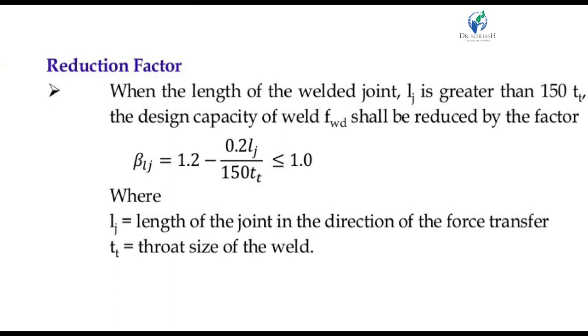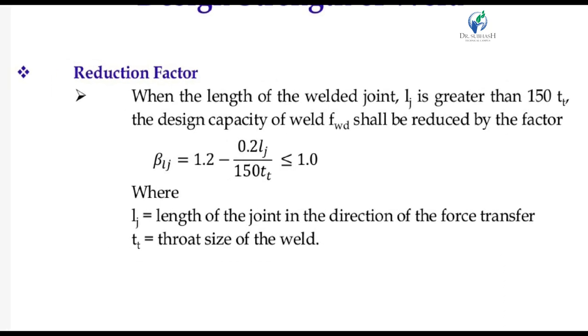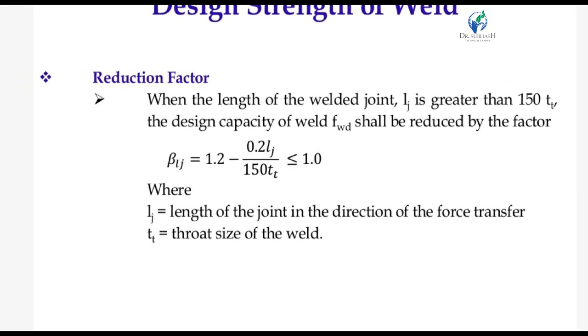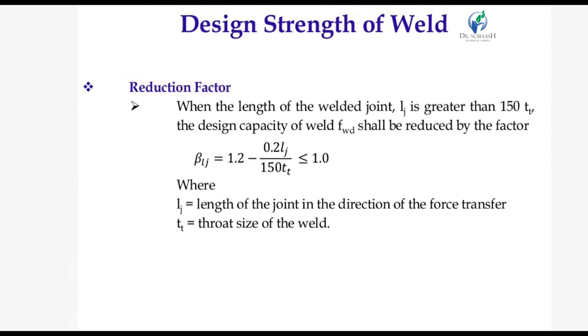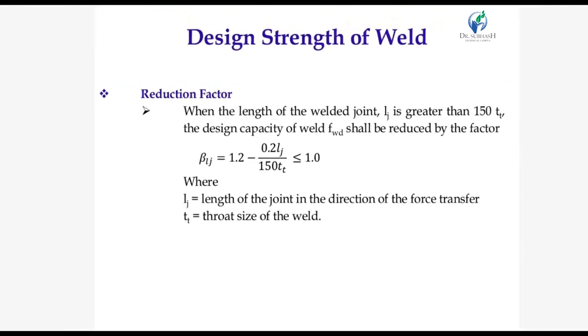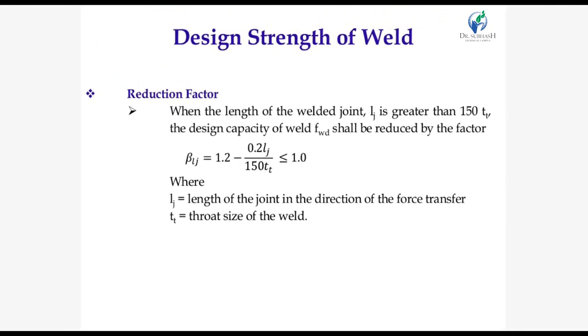The reduction factor β_LJ should be less than or equal to 1. These are the design criteria used when calculating the design of welds or determining the size of weld. Thank you.